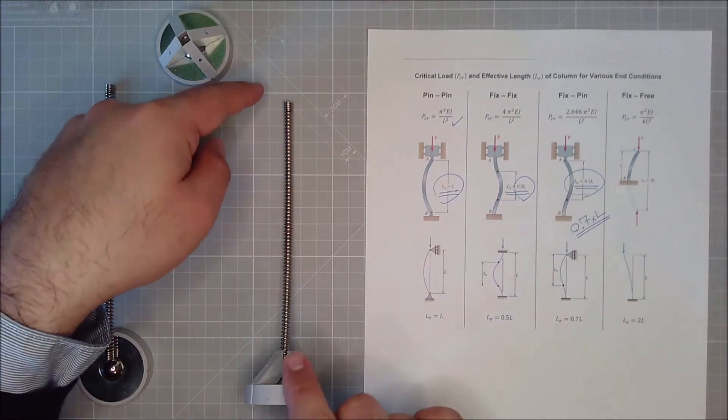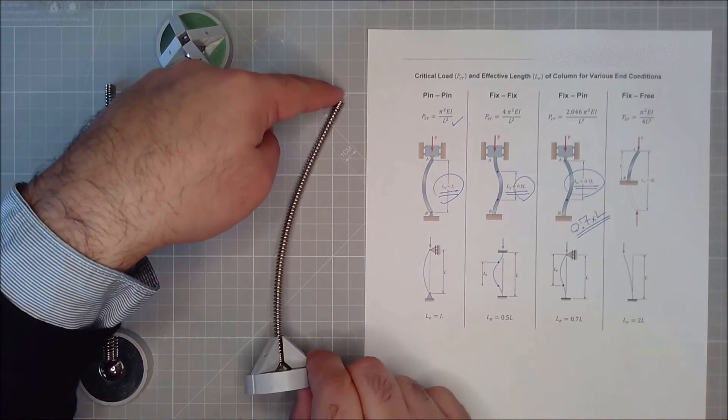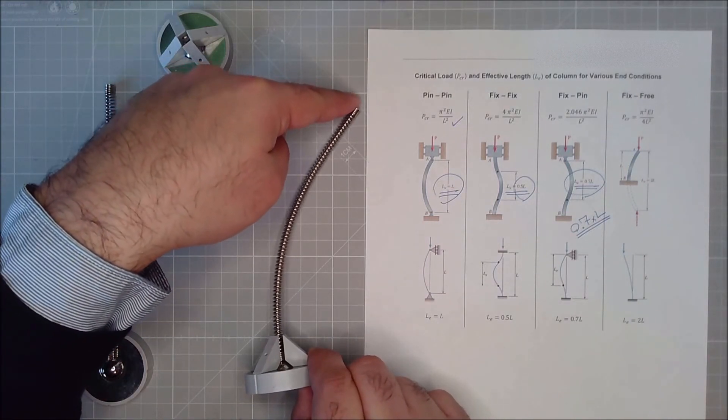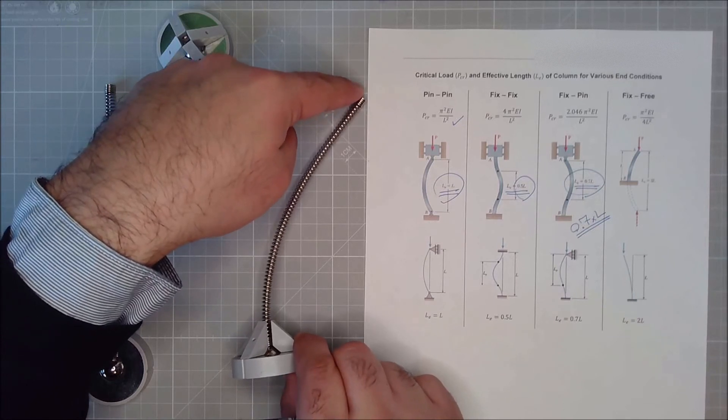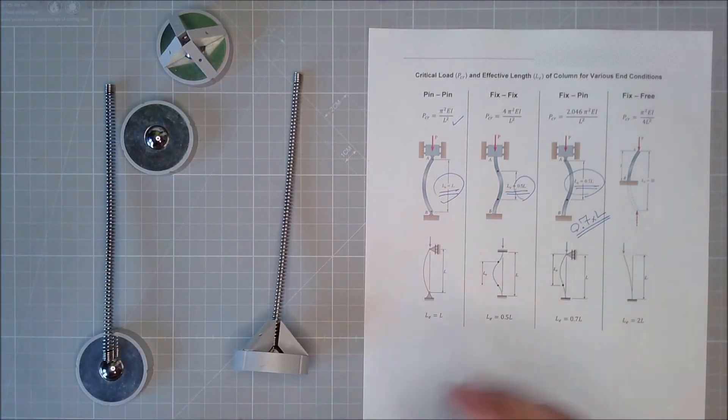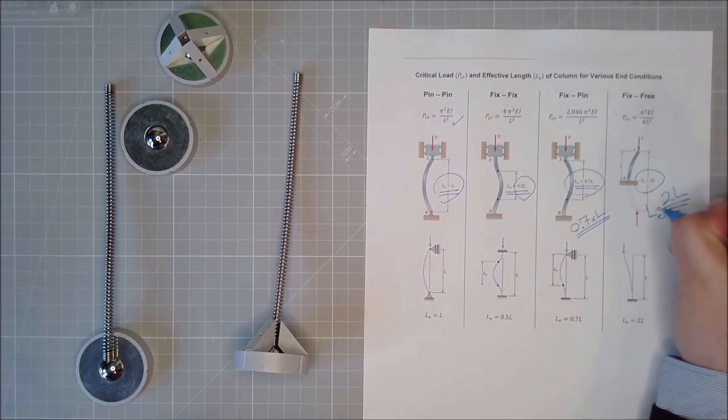The free end with a fixed end, as you can see, the rest of it is inside the ground, is below my footing. So the length will be twice, the effective length will be twice the actual length of my column.